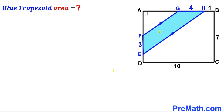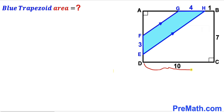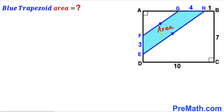Welcome to PreMath. In this video we have a blue shaded trapezoid EFGH fully inscribed in a rectangle ABCD, such that sides FG and EH are parallel to each other. Segment GH is 4 units, segment EF is 3 units, one side of the rectangle is 10 units, the other side is 7 units, and the tiny segment BH is 1 unit. Our task is to calculate the area of this blue shaded trapezoid.